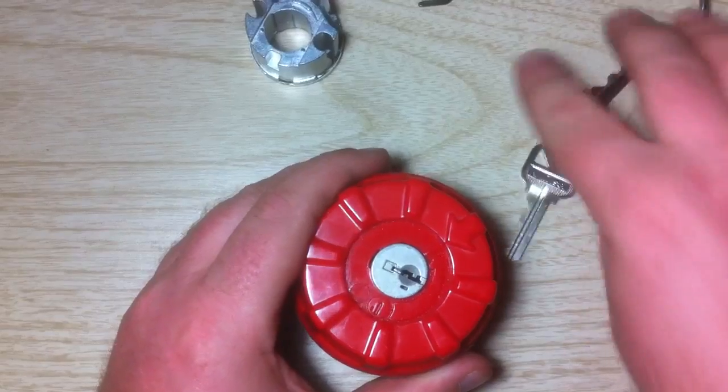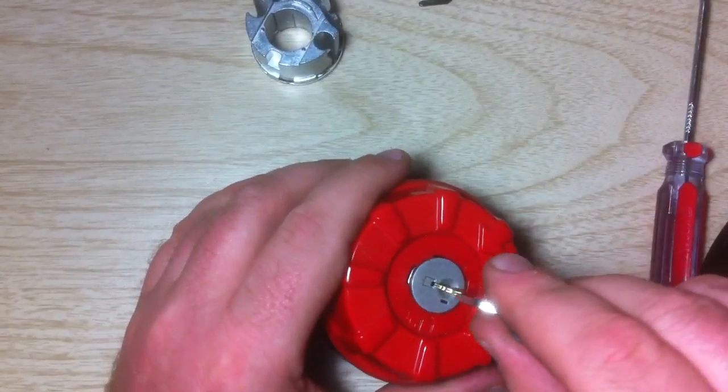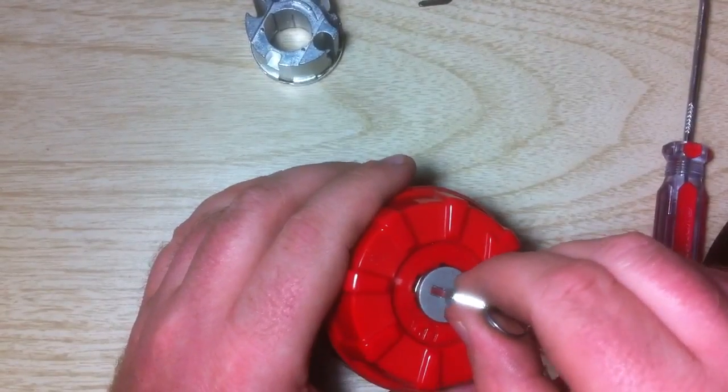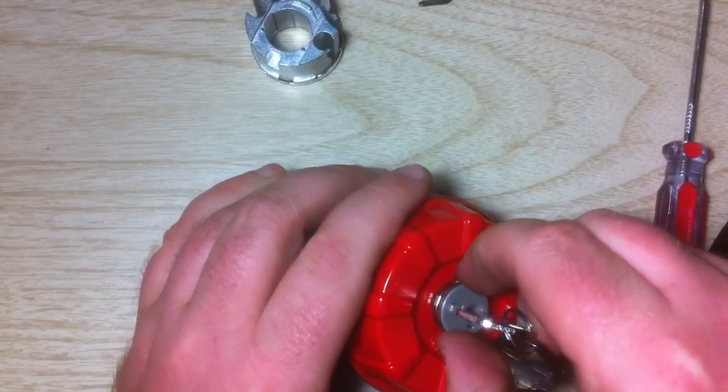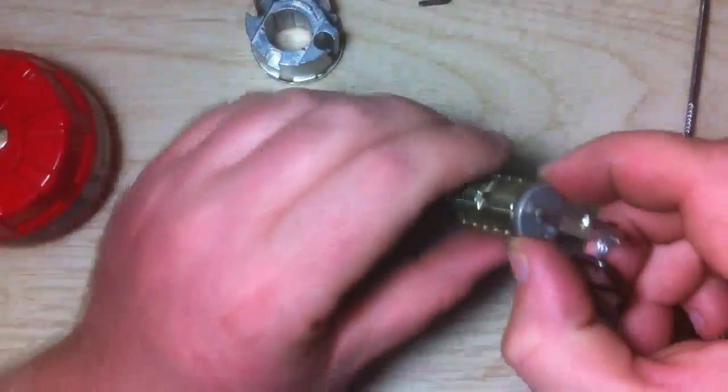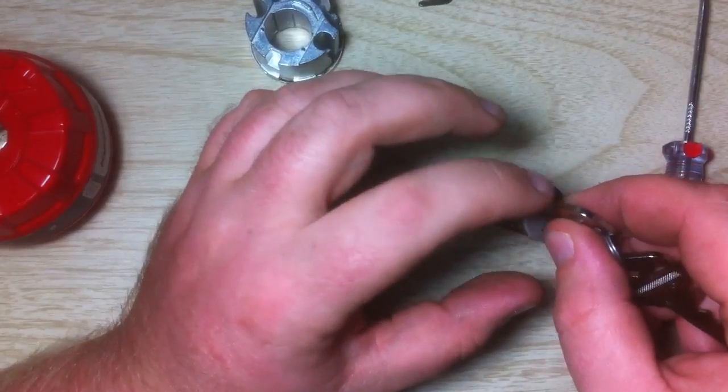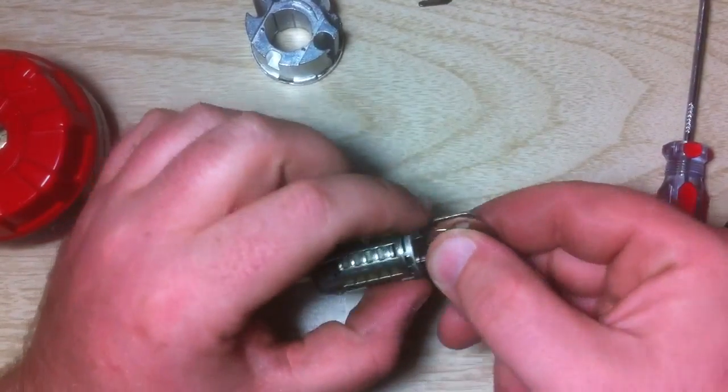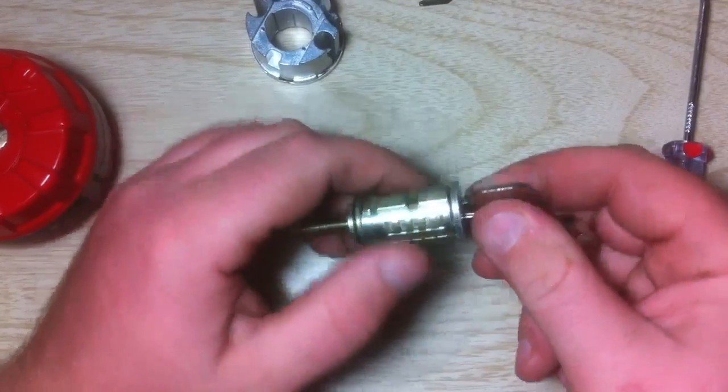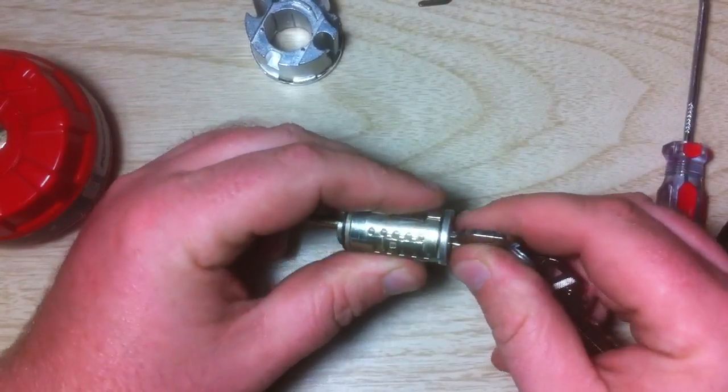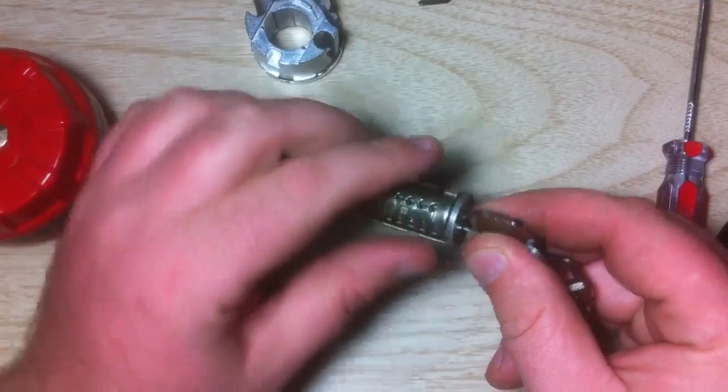Then you take whichever key that you want to operate the lock, stick it into the keyway, and carefully, just gently, remove the plug from the cradle. After you do this, you have to put the twelve o'clock position of the key back to the home position.